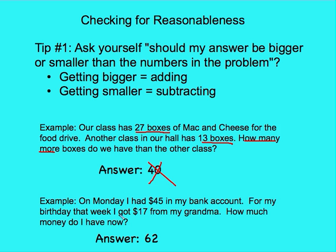Let's look at the second problem. On Monday, I had $45 in my bank account. For my birthday that week, I got $17. How much money do I have now? This person answered 62. We check our work by asking: should my answer be bigger or smaller than the numbers in the problem? In this problem, I started with some money and got more money. I would expect that since I got more money, my savings account would be growing — it should be a bigger number. I can see that my number is indeed bigger, so yes, it sounds okay. 62 is bigger, so I probably did the correct operation.